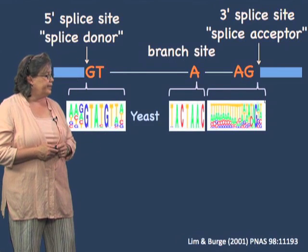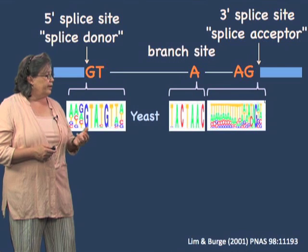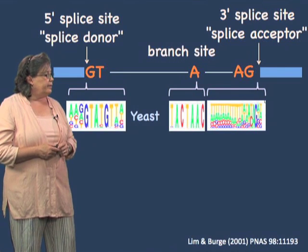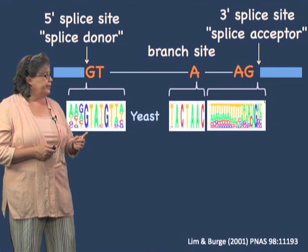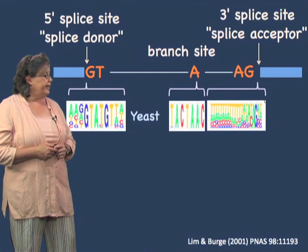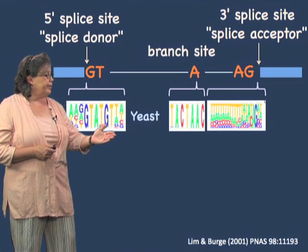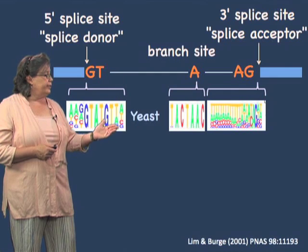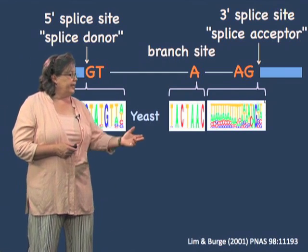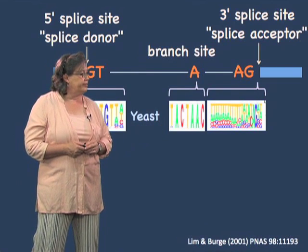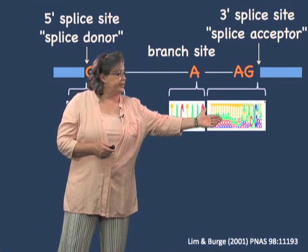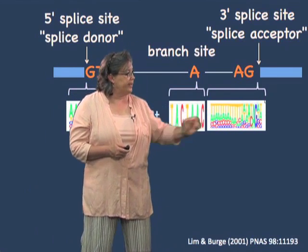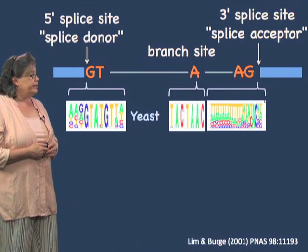Here are the consensus sequences for budding yeast, shown as motif logos. The height of the letter tells you how conserved that site is. You can see the GT at the 5' splice site, and in addition to the GT, there are several other highly conserved nucleotides and a few that are less conserved. At the branch site in yeast, there is a very highly conserved TACTAAC sequence. And then upstream of the 3' splice site, there's not much conservation until you get right to the 3' splice site itself.